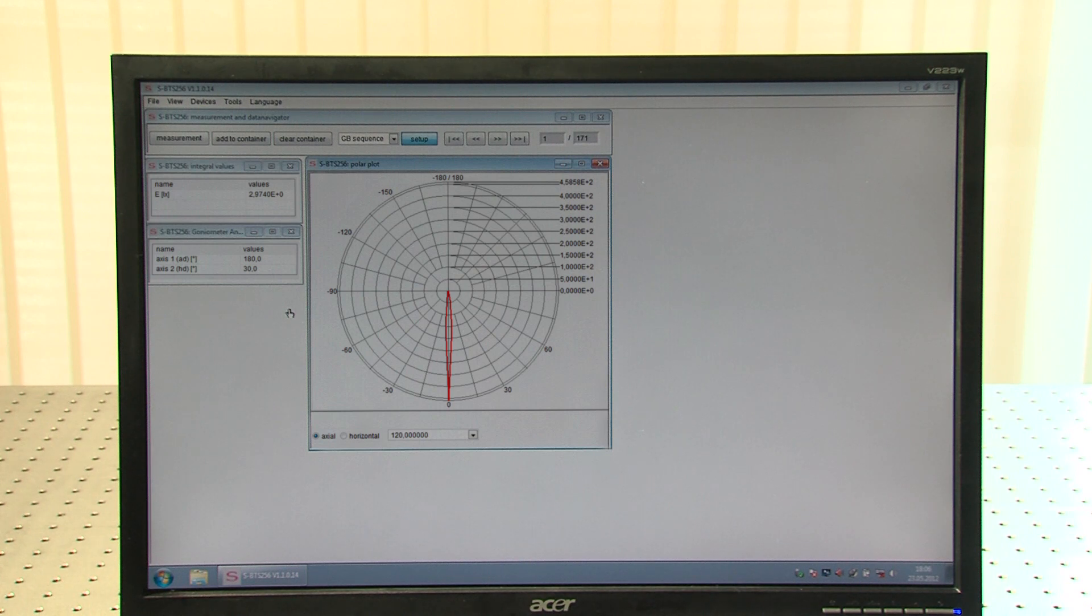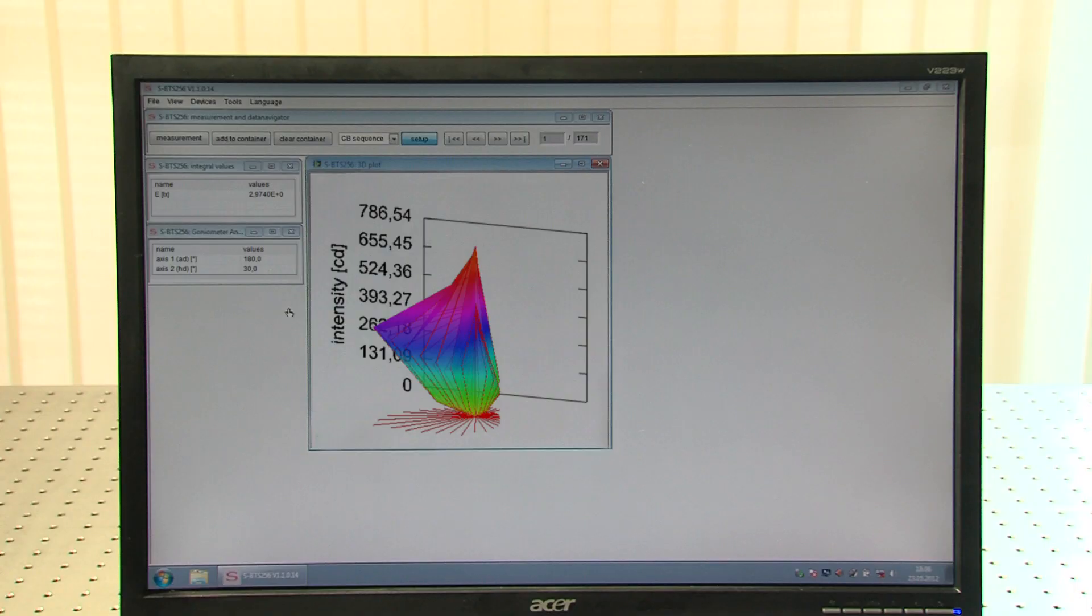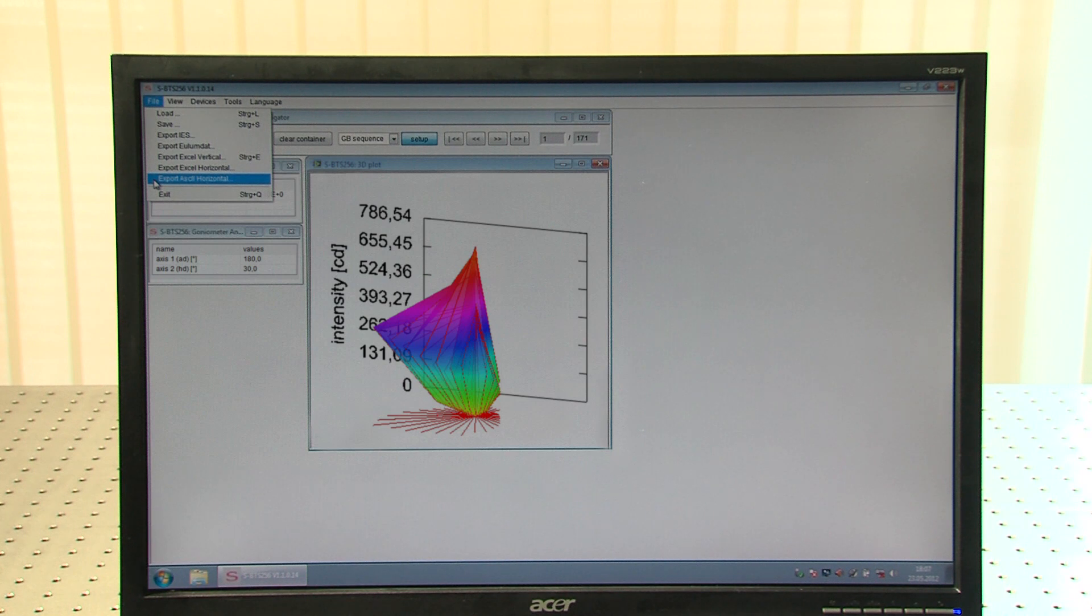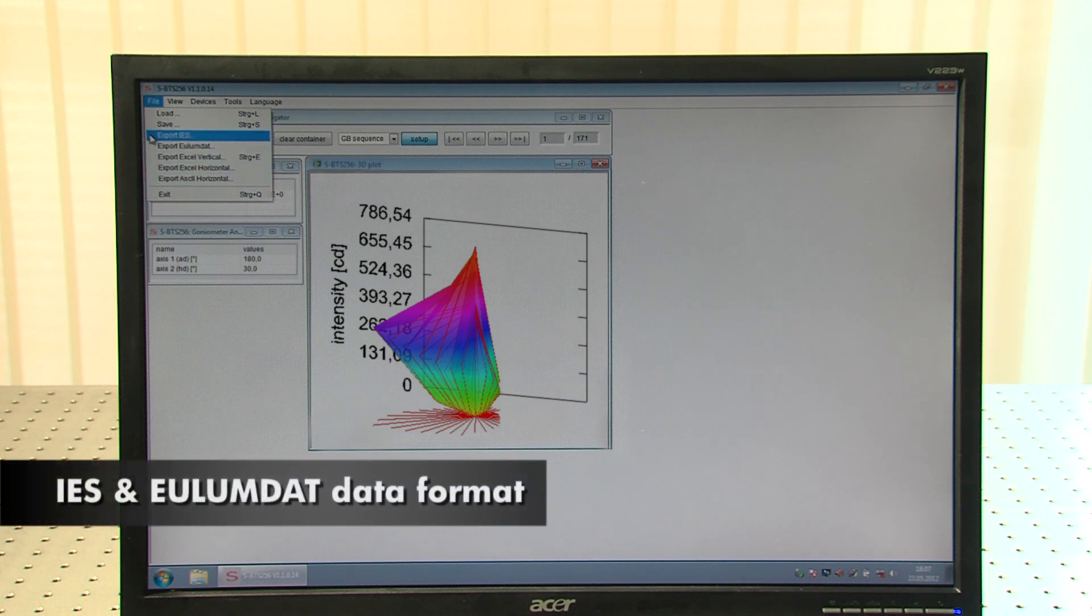At the end of the measurement, the readings reappear in the data container. Readings recorded in the data container can be shown graphically in two-dimensional or three-dimensional polar coordinate plots. Measurements recorded in the data container can be stored. Readings in the data container can be exported to the ASCII format. Data container contents can also be exported to the IES and IllumDAT formats.